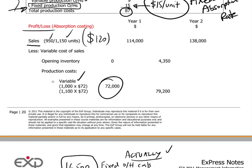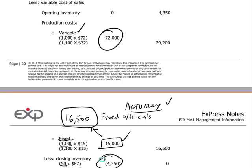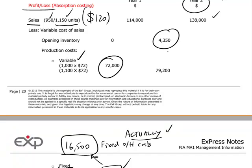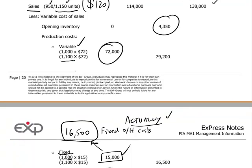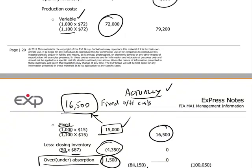The viewer is now invited to redo the year two calculations following exactly the same logic. We are selling 1,150 units to give the revenue figure. The closing inventory figure of $4,350 becomes our opening inventory at the beginning of year two. We then follow the same logical progression to determine production costs in year two, where 1,100 units are produced. In the absorption costing system, we must not forget to account for fixed costs.